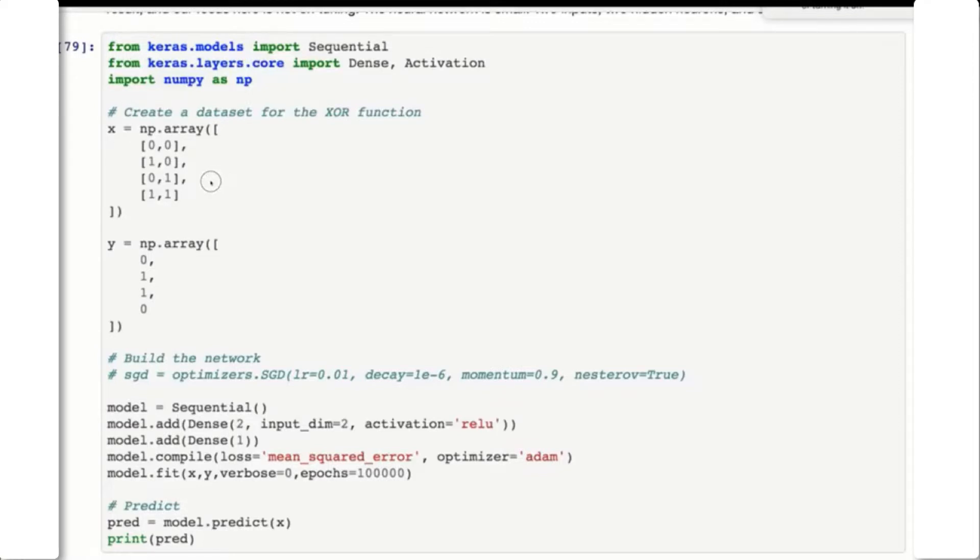For this we're going to use an exclusive OR neural network—the XOR function. These are the inputs to it: 0,0 the usual truth table for any sort of AND or OR. This is the expected output. The thing to remember with XOR is if the two inputs are the same, it's going to be 0. If the two inputs are different, 0 and 1 versus 1,0, it's going to be 1.